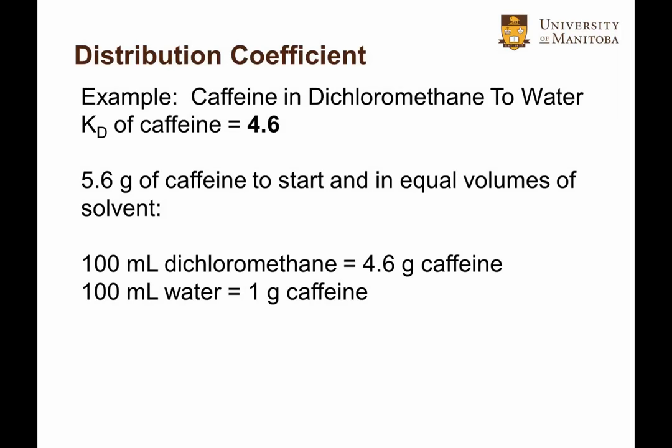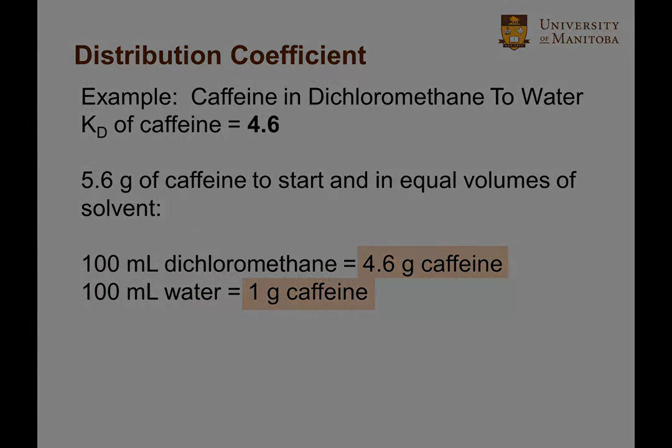As an example, the distribution coefficient of caffeine in dichloromethane to water is 4.6. So with a total of 5.6 grams of caffeine distributed in 100 milliliters of dichloromethane and 100 milliliters of water, I expect to find 4.6 grams of caffeine in the dichloromethane and 1 gram of caffeine in water.